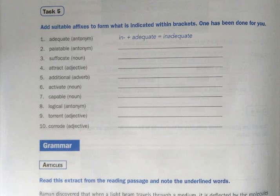Next, torrent into an adjective: we get torrential. And corrode into an adjective: we get corrosive. So with these exercises we come to the end of the vocabulary section. In the next video we'll be dealing with grammar. Thank you.